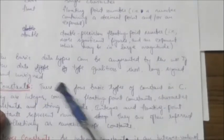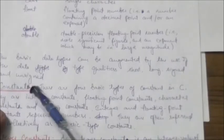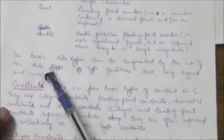These are the basic data types supported in C programming language. The basic data types can be augmented by the use of data type qualifiers: short, long, signed, and unsigned. We will study about them later.